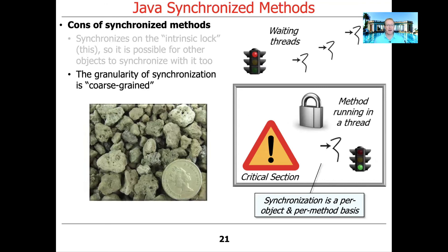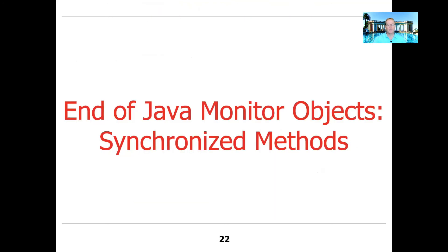Another potential limitation is that the granularity of synchronized methods is fairly coarse-grained — synchronization is on a per-object, per-method basis. That might be too coarse-grained compared to synchronized statements, which we'll talk about next, where you can have more concurrency because you only lock the parts where there's actual contention for shared mutable state rather than the entire method. On the plus side, the whole mechanism is very simple — you just put in a keyword, you don't need random lock objects or the try-finally idiom we've discussed before.